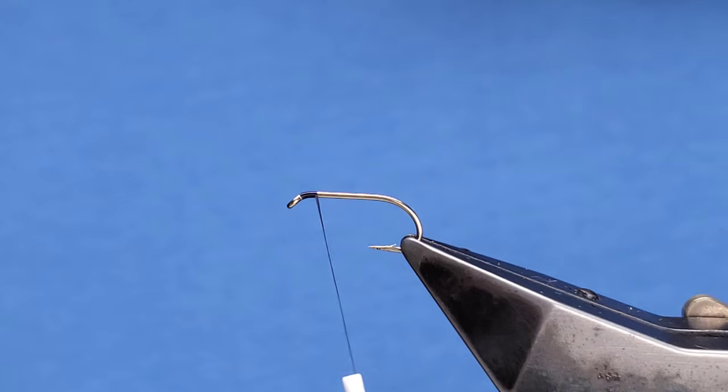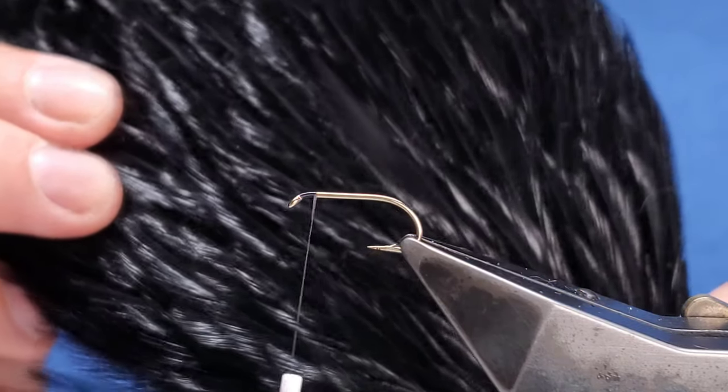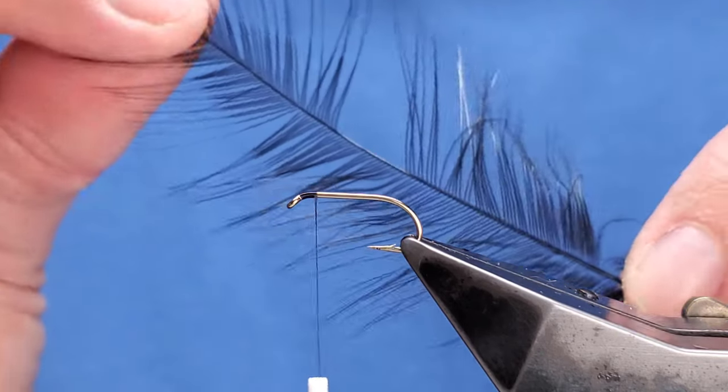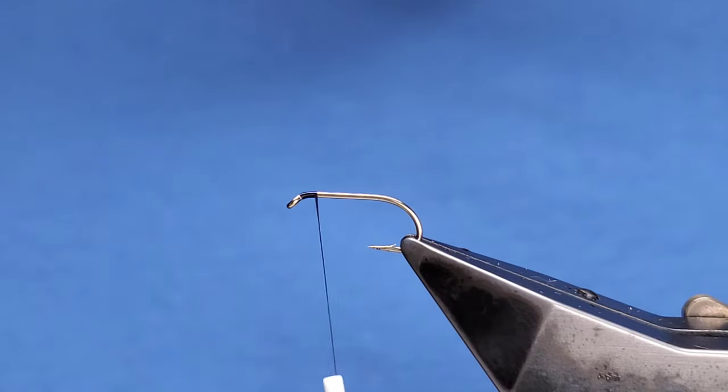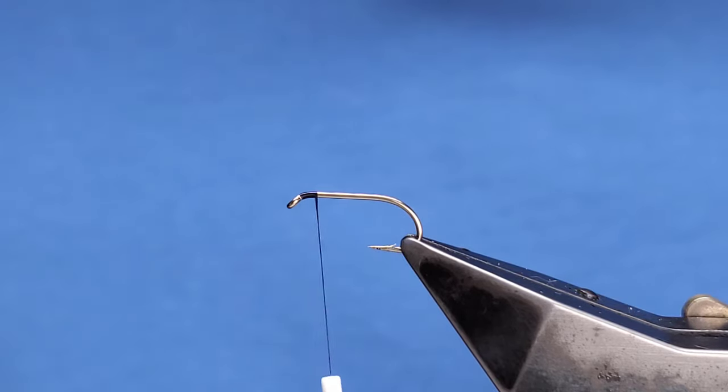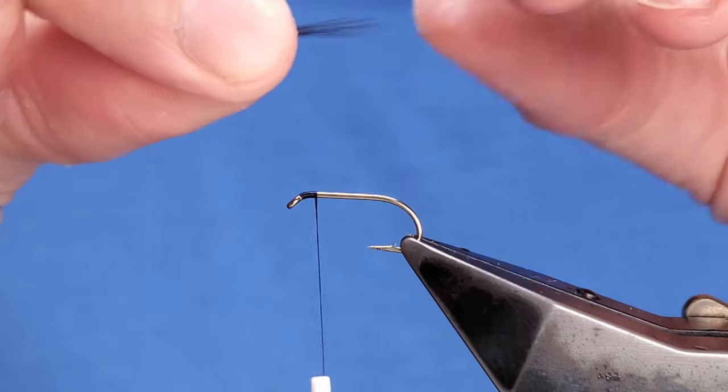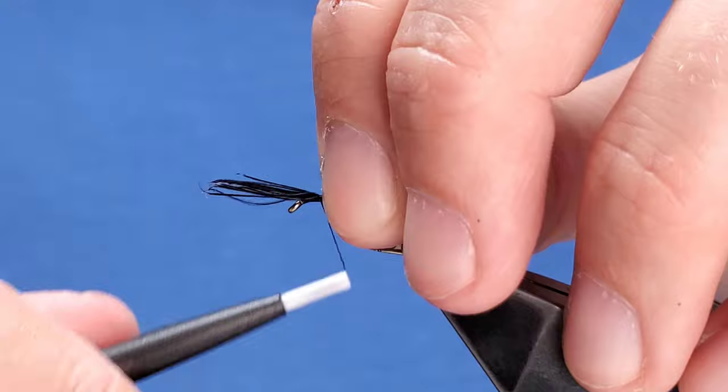For the tail, this is a Chinese cock neck dyed black. I've taken one of the larger feathers from the back of the neck. Pull them off 90 degrees to your stem, take a pinch, try not to handle them too much otherwise the tips don't tend to line up. Make the tail the same length as your hook shank.